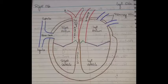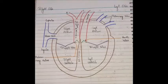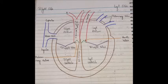In the diagram we can clearly see the right side and left side of the heart and the four chambers: right atrium and left atrium as the upper two chambers, while the lower two chambers are right ventricle and left ventricle. On the right side, the tricuspid valve is present between the right atrium and right ventricle, while the pulmonary valve is present between the pulmonary artery and right ventricle. On the left side, the bicuspid valve is present between the left atrium and left ventricle, while the aortic valve is present between the aorta and the left ventricle.